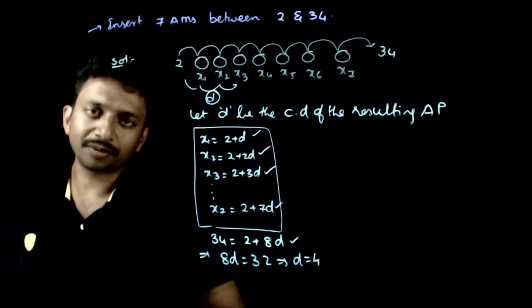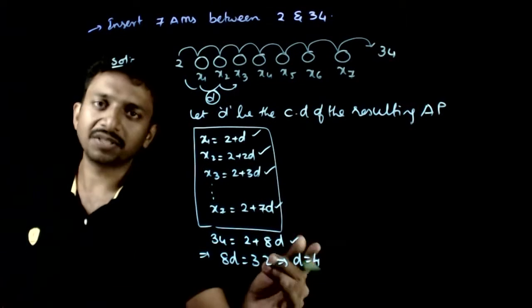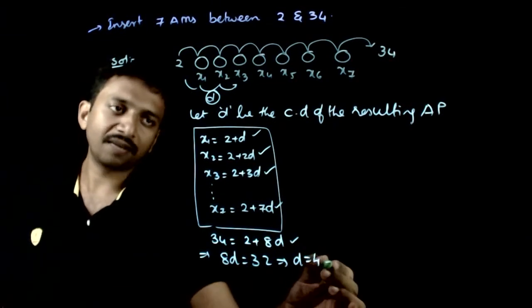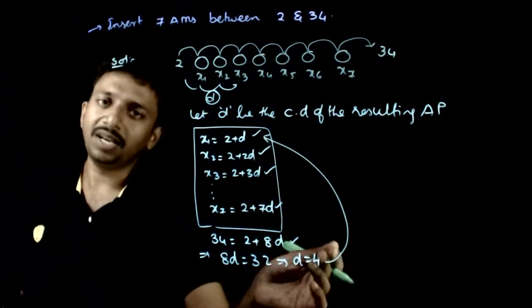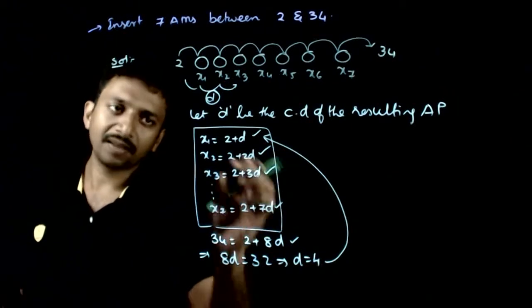32 by 8 is 4. So the last equation gives us D. Once you have D, you just need to substitute D in this equation.